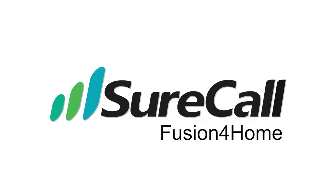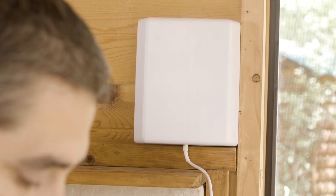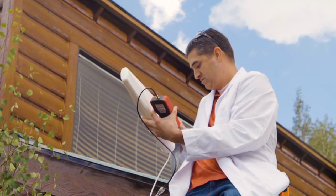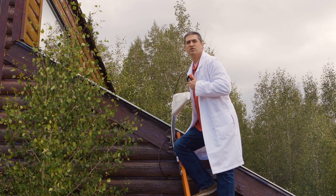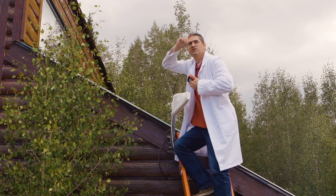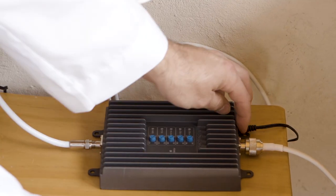So we decided to install the SureCall Fusion 4 Home signal booster and we're going to give it a try. Right now, I've got little to no cell phone coverage. I used the SureCall signal meter to point the outside antenna to the best location where I could get the best signal. We ran a wire inside and installed the signal booster right here on the inside, how it's supposed to be installed. Let's see if it works like they claim it does. Turn it on.